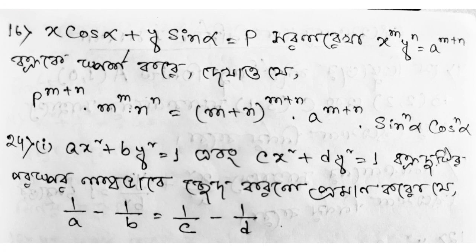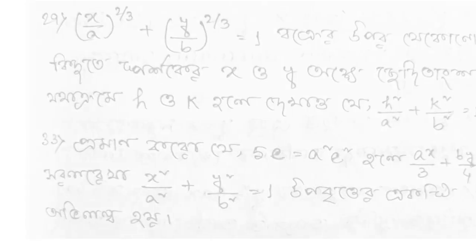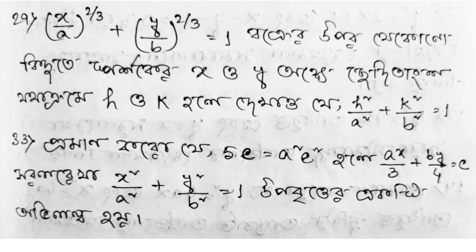Number 24 says: ax squared plus by squared equals 1 and cx squared plus dy squared equals 1; if the two curves cut orthogonally, prove that 1/a minus 1/b equals 1/c minus 1/d. Number 29: x by a to the power 2/3 plus y by b to the power 2/3 equals 1; for any point on the curve, the tangent cuts the x and y axes at H and K — show that H squared by a squared plus K squared by b squared equals 1.